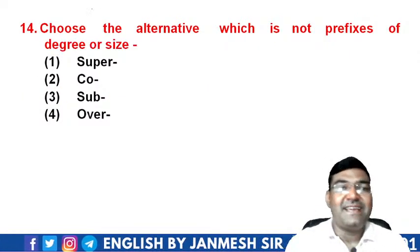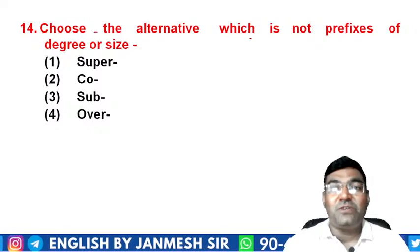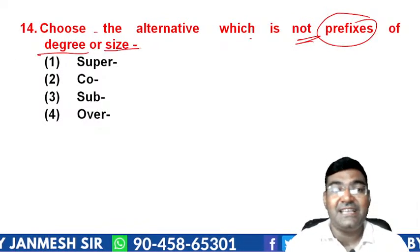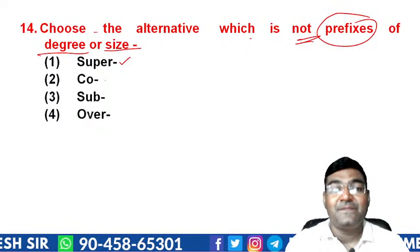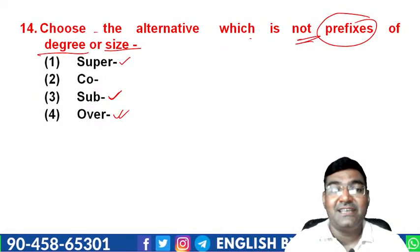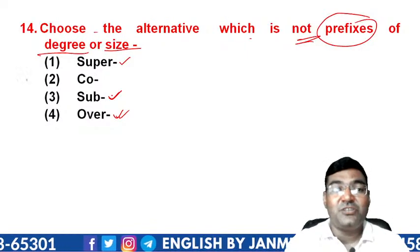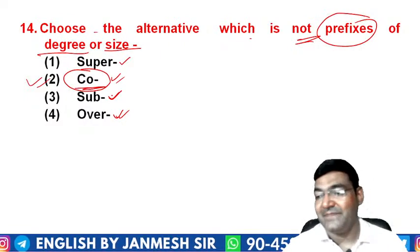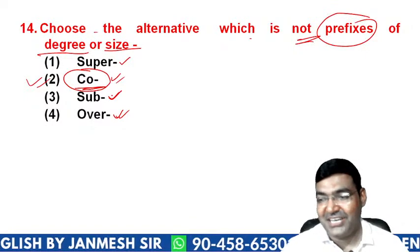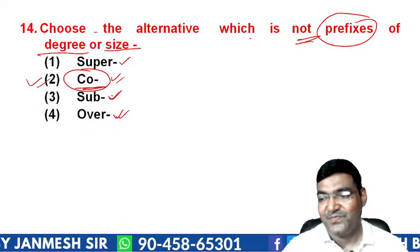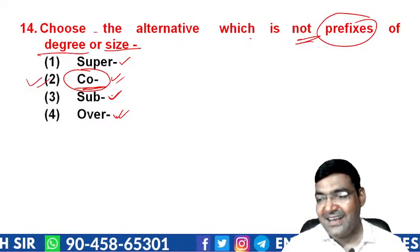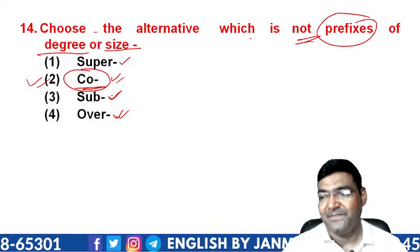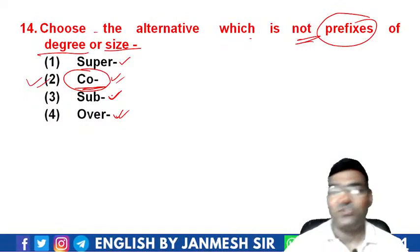Question 14: choose the alternative which is NOT a prefix of degree or size. Options include 'super', 'sub', 'over', and 'co'. 'Super', 'sub', and 'over' can all indicate degree or size — like 'supersize', 'subdivision', 'oversize'. But 'co-' indicates togetherness, not degree or size — for example, 'co-education'. So 'co-' is the answer. All students answered correctly.